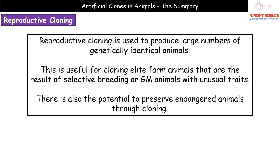Reproductive cloning is how we're going to produce large numbers of genetically identical animals. This is what we would use for cloning elite farm animals — the ones that have gone through selective breeding over many generations to give us the best characteristics. They are the best of the best. We can also use this to clone our genetically modified animals — for example, creatures created with a particular unusual trait.